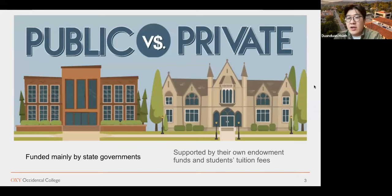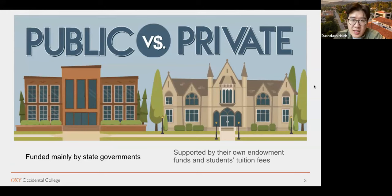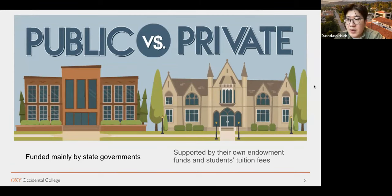Starting on a wide scope, there are 5,000 universities and colleges in the US — a very large amount. We're very fixated as a society on the top 200 colleges and universities, but in reality there are 5,000. The first thing you need to distinguish when starting your college search is between public and private universities. Public universities are mainly funded by state governments, while private universities are often funded by their own endowment or students' tuition fees.